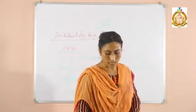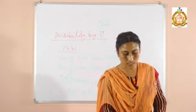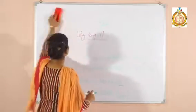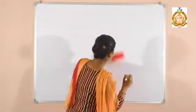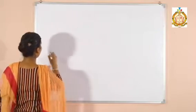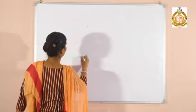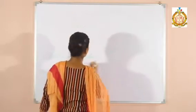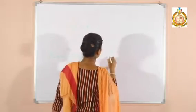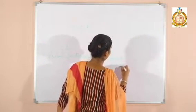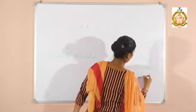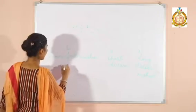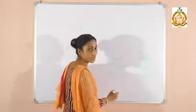Now we will start the topic HCF and LCM. Your exercise 3.3 is based on HCF. The full form of HCF is Highest Common Factor. There are three methods to find HCF: the first is the prime factorization method, the second is the short division method, and the third is the long division method. Your exercise 3.3 is based on the prime factorization method, and exercise 3.4 is based on the short division and long division methods.